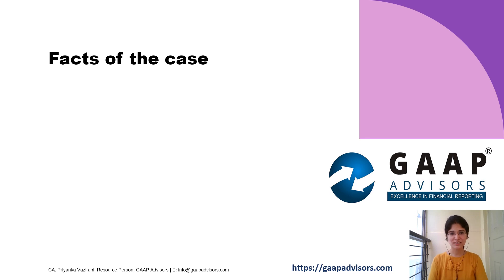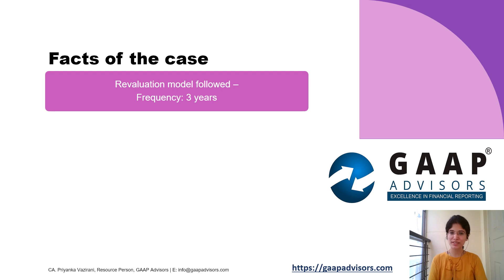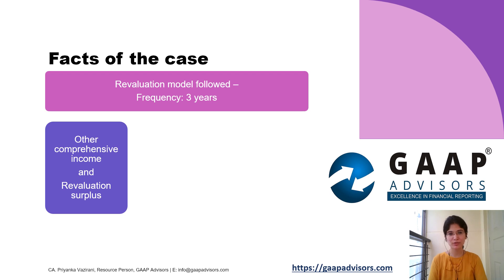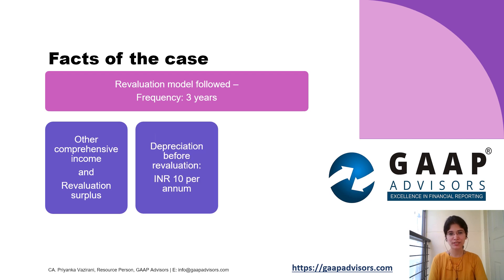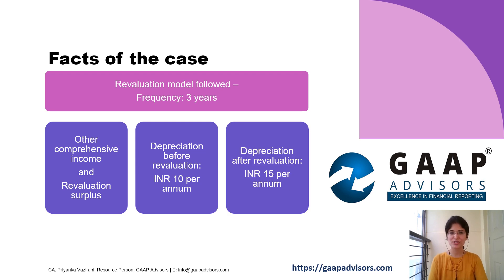In this case, the company is following the revaluation model for an item of property, plant and equipment which it revalues every 3 years. Based on the revaluation model, the company accounted for the increase in the carrying amount of the asset on account of revaluation in other comprehensive income and accumulated it in equity under the heading of revaluation surplus. Depreciation before revaluation was Rs.10 per annum and post-revaluation, it increased to Rs.15 per annum.